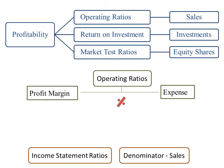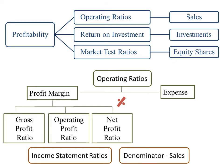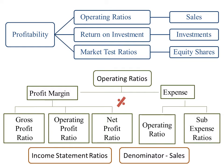There are three types of profit margin ratios: gross profit ratio, operating profit ratio, and net profit ratio. Expense ratios consist of operating ratio and sub-expense ratios. Today we are going to focus on gross profit ratio.